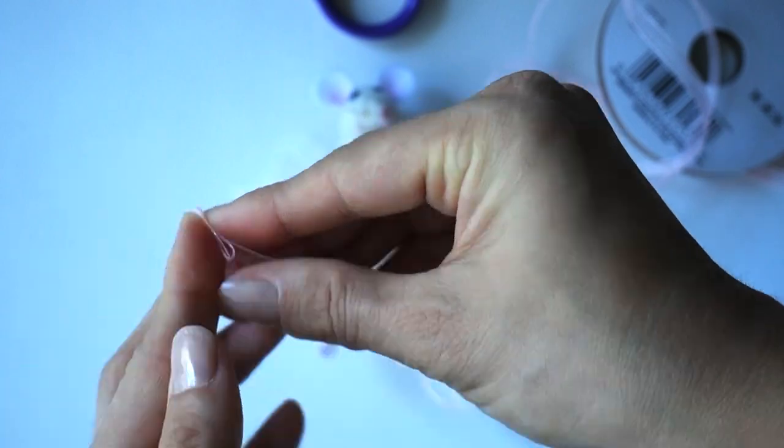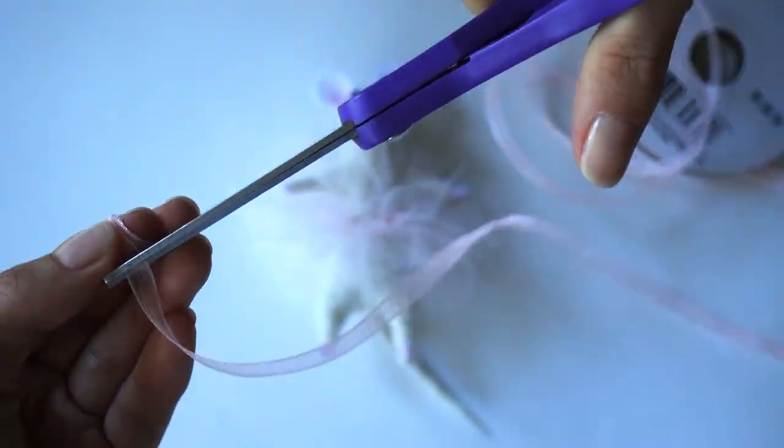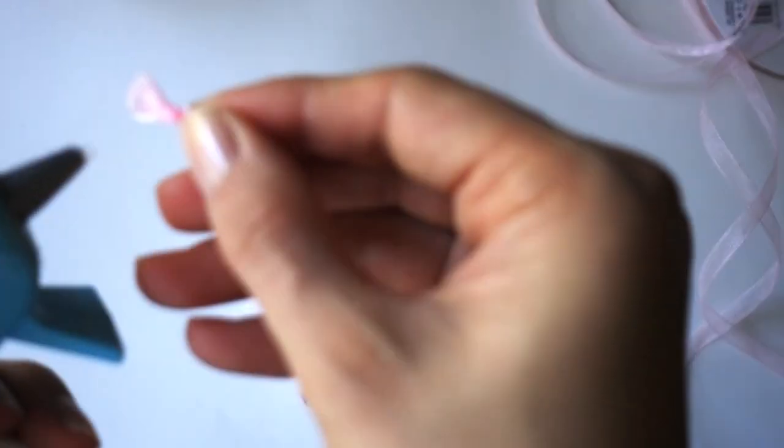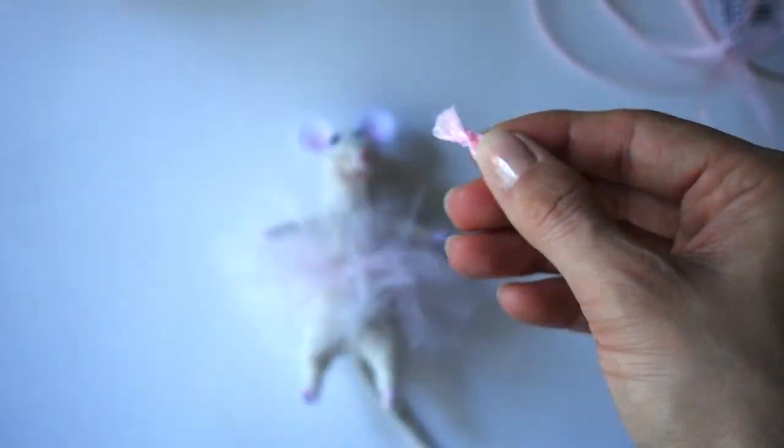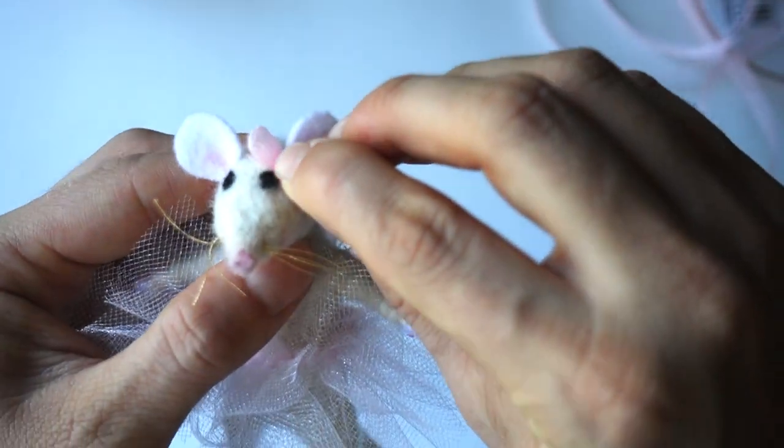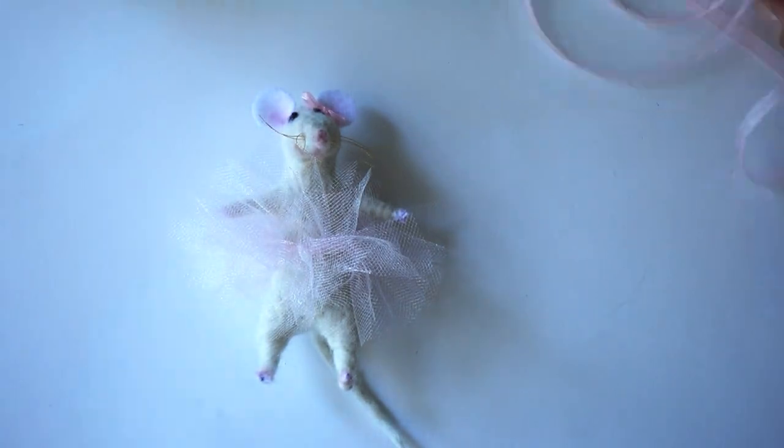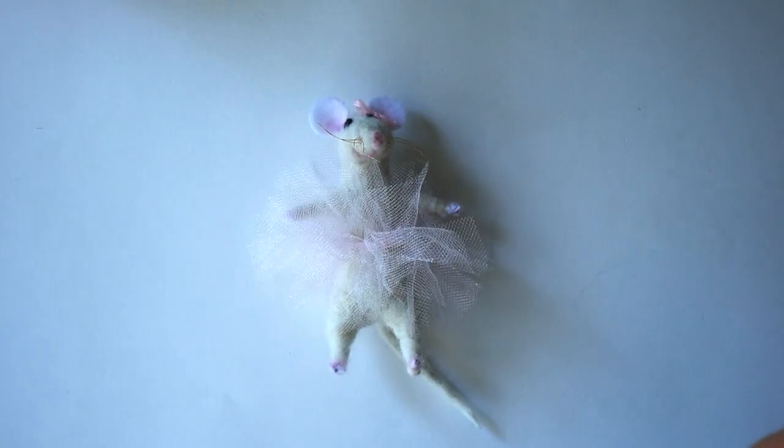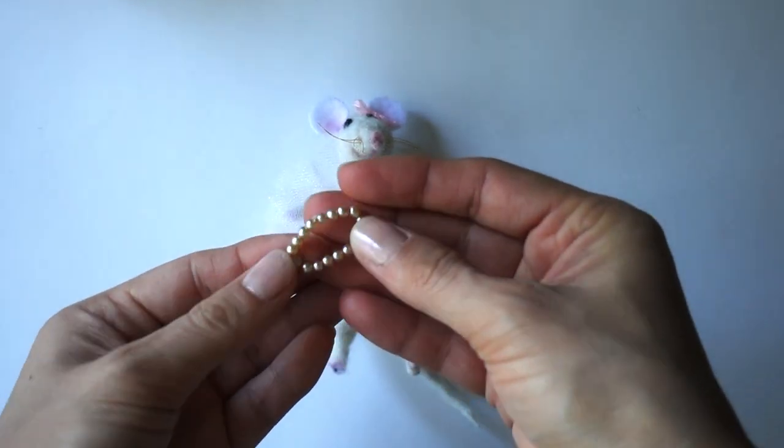To finish up the mouse, I created a bow and attached it next to the ear. I also added a beaded necklace that I created previously.